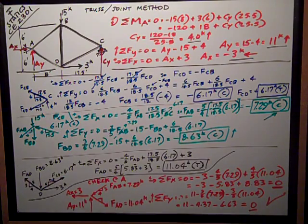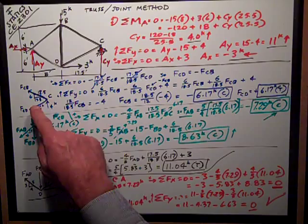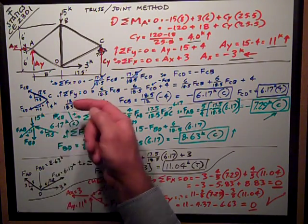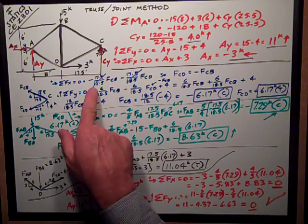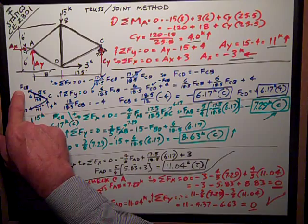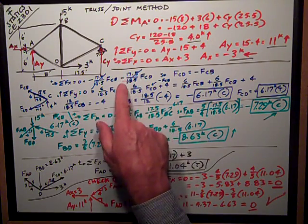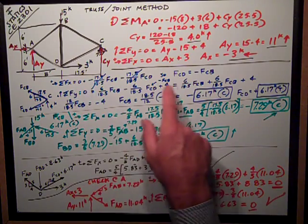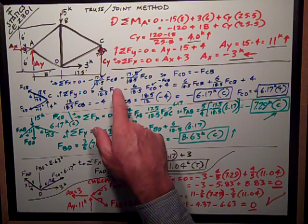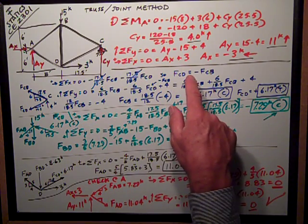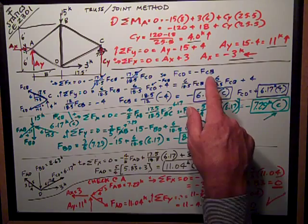First thing I do is sum forces in the X direction because it eliminates my applied force of four kips from our reaction at C. I get both of these are the horizontal components to the left, so it's negative 17.5 over 18.5 force in CB, minus the same term times the force in CD, and that's equal to zero. Therefore, I can eliminate the 17.5 over 18.5, and I just get FCD is equal to negative FCB.